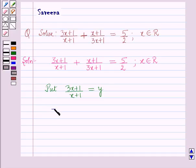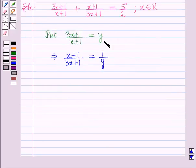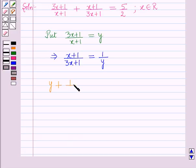This implies (x + 1)/(3x + 1) = 1/y. Now putting these values in the equation, it will be y + 1/y = 5/2.